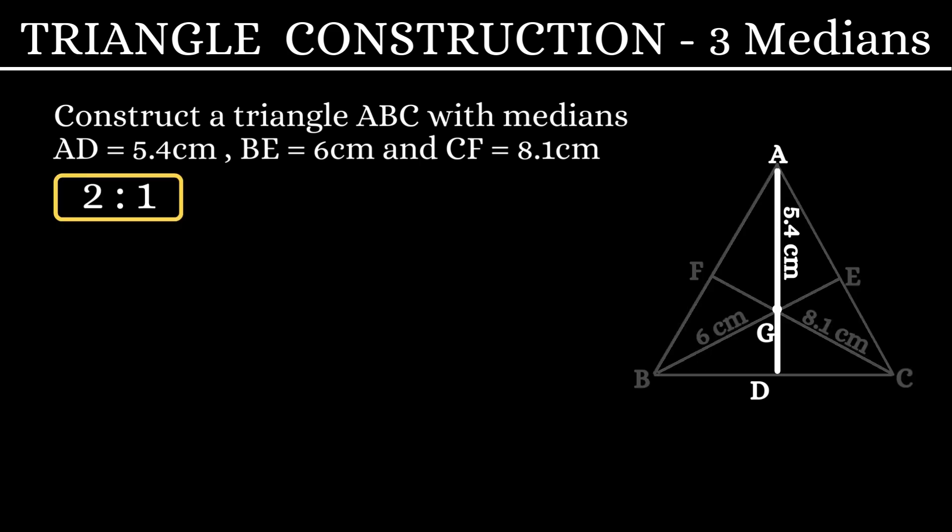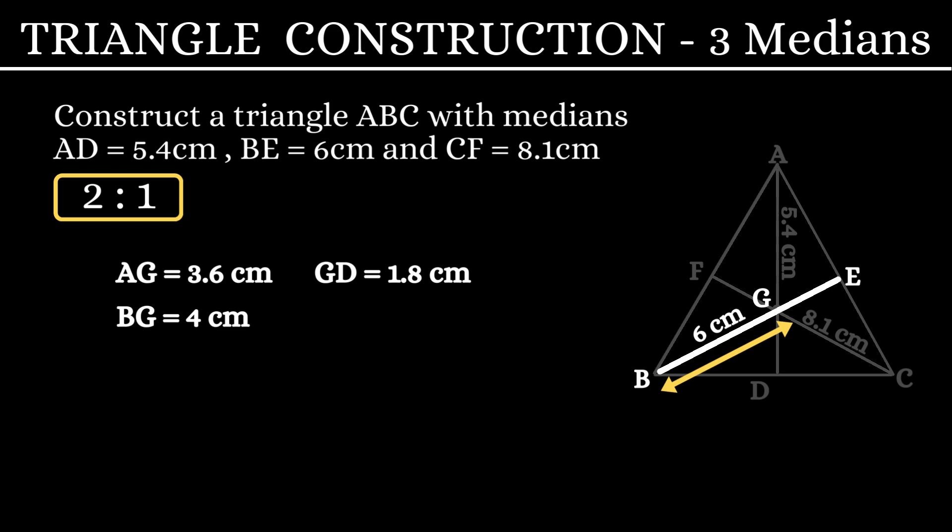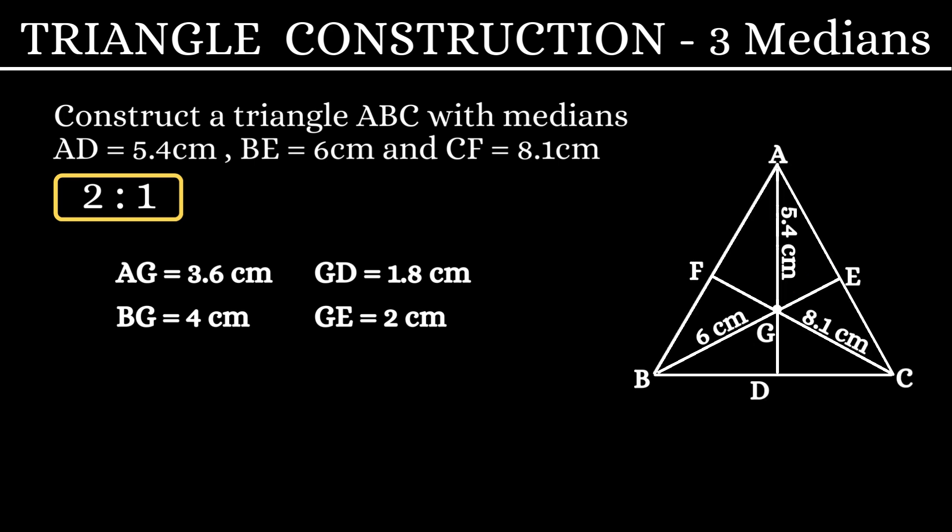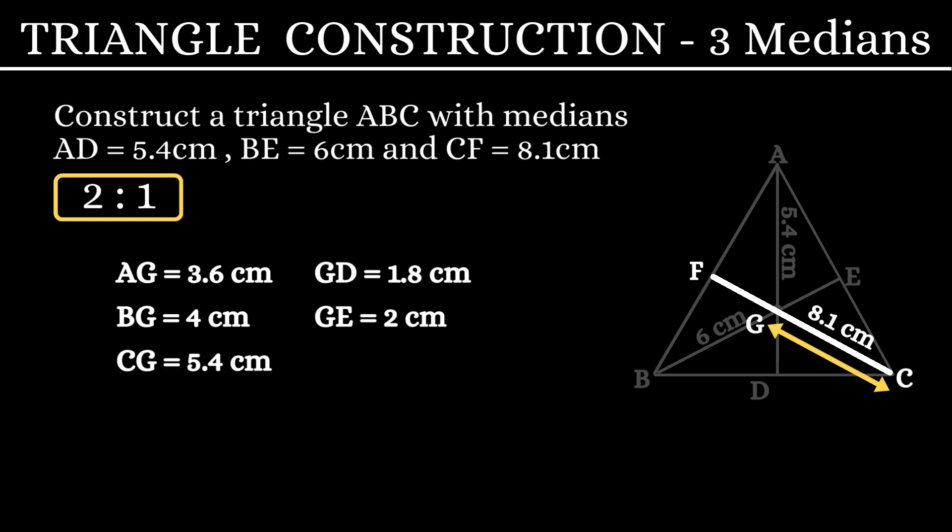AD is 5.4 cm, so AG will be 3.6 cm and GD will be 1.8 cm. Next, BE is 6 cm. Since the ratio is 2 is to 1, we have BG is 4 cm and GE is 2 cm. Similarly, CF is 8.1 cm, so CG is 5.4 cm and GF is 2.7 cm.